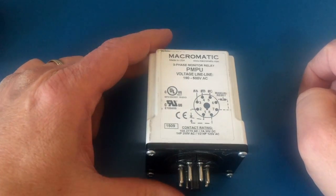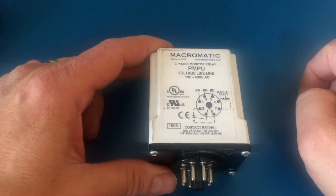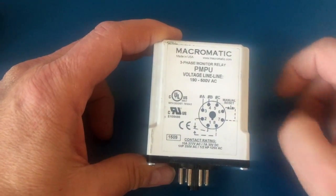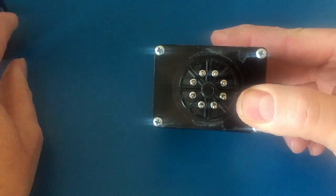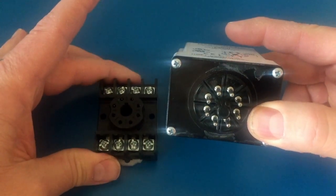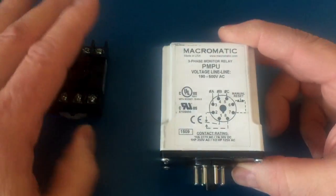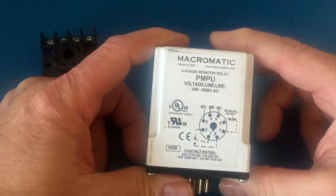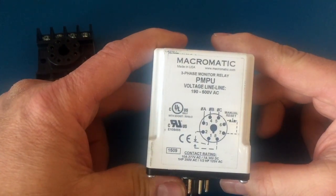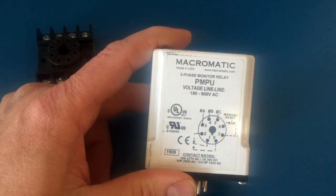Now there are different makes, configurations, and models out there, but today we're going to look at a common type that's installed in an 8-pin base. Here's our base. Now this is a Macromatic brand and it's similar to other socket mounted phase relays out there.